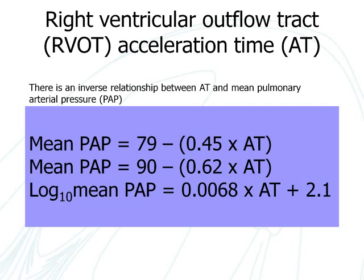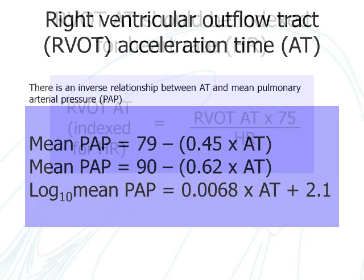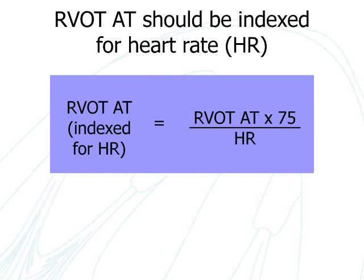A value below 105 ms is suggestive of the presence of pulmonary hypertension. Acceleration time should be indexed for heart rate, as shown here.